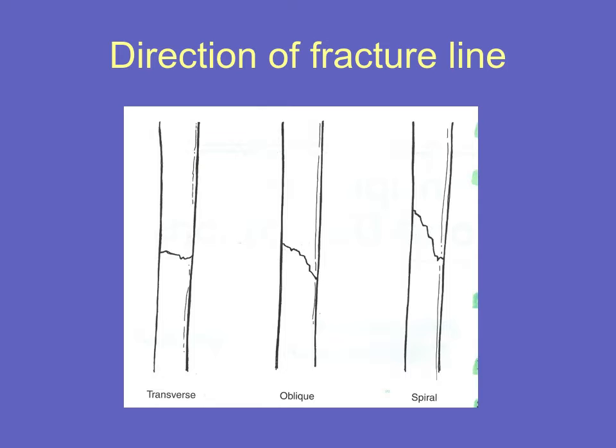It's possible to determine the mechanism of injury from the direction of the fracture line, and this is an important piece of information to convey. A transverse fracture may occur from a direct blow or from axial loading. Oblique fractures can occur because of bending. And a spiral fracture can occur because of torsion or twisting of the bone.